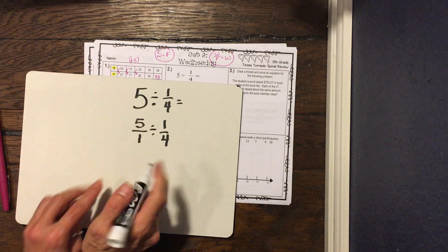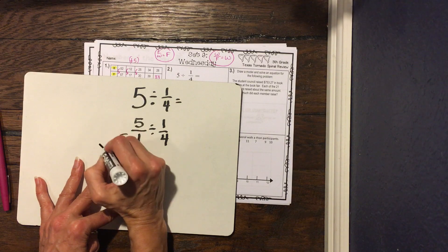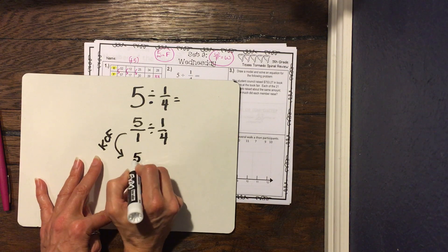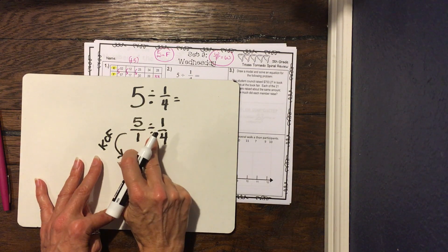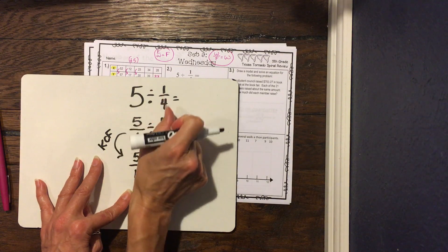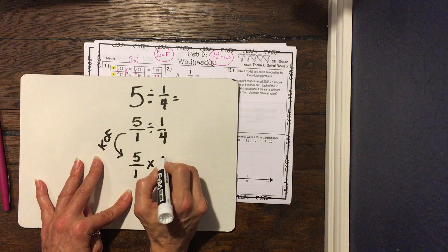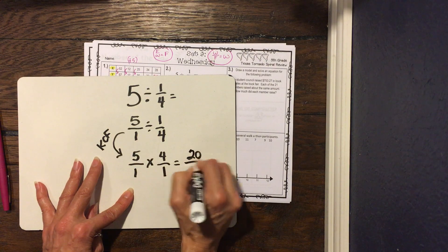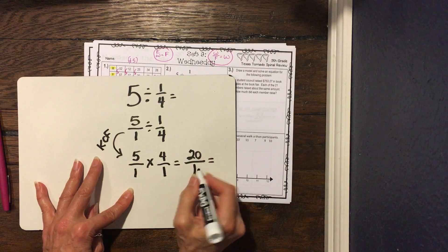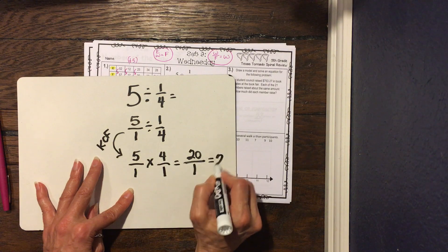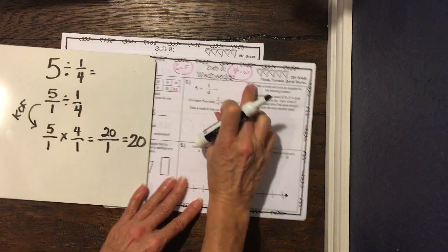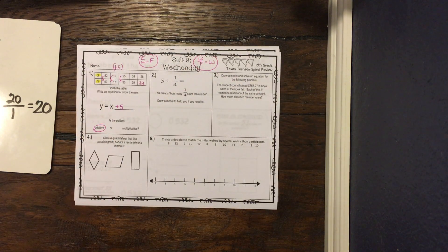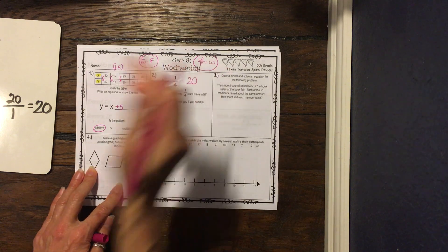Now we do KCF — Keep, Change, Flip. We keep our first fraction 5/1, change division to multiplication, and flip the second fraction to get 4/1. Multiplying straight across: 5 times 4 is 20, and 1 times 1 is 1, giving us 20/1. We know 20 over 1 equals 20. So whole divided by fraction equals whole — yes, our answer is 20.